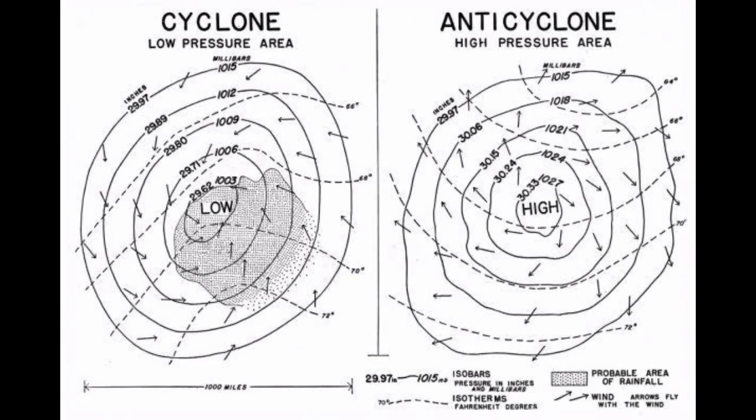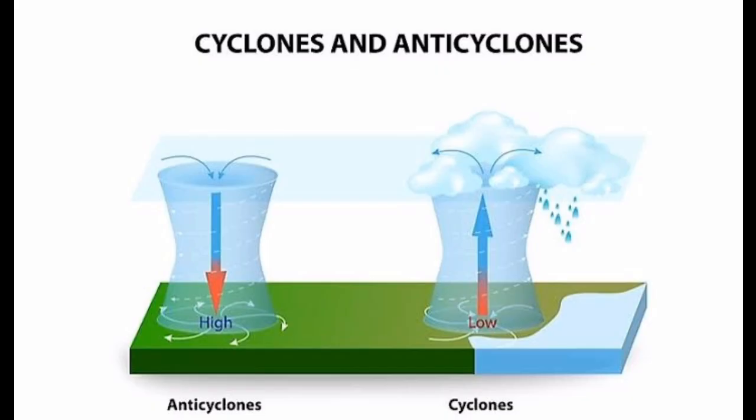An anti-cyclone is a region of high atmospheric pressure relative to the surrounding air, generally thousands of kilometers in diameter, also known as a high or high pressure system. Anti-cyclones appear on weather charts as a series of concentric, widely spaced isobars of 1000 millibars and above. The roughly circular closed isobar at its central region indicates the area of high pressure.